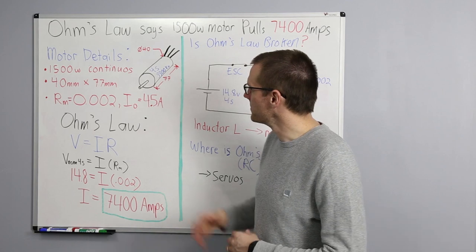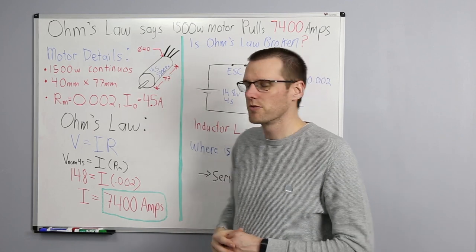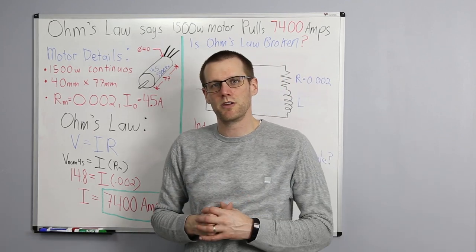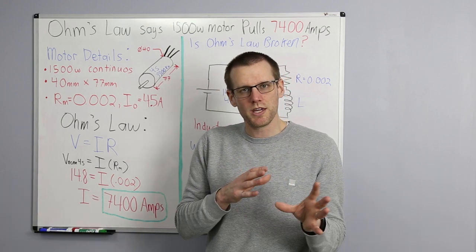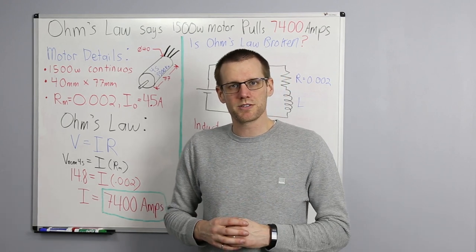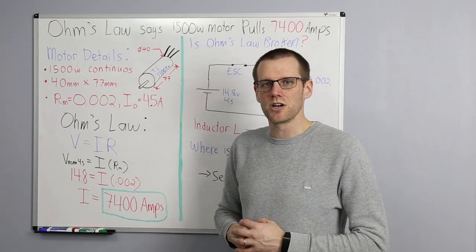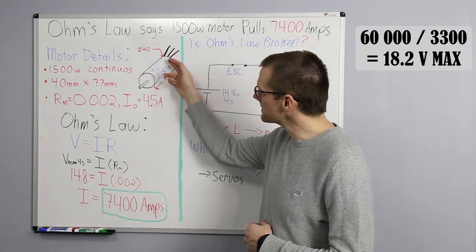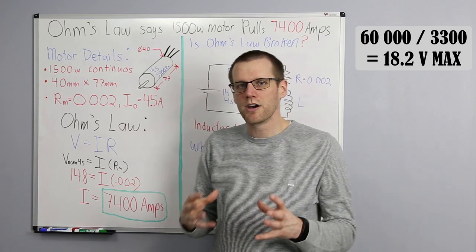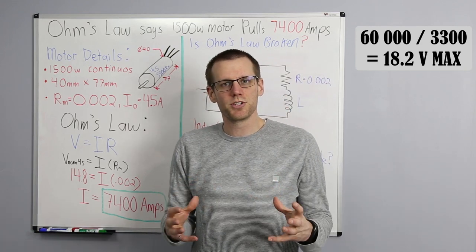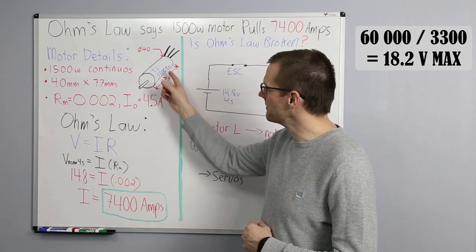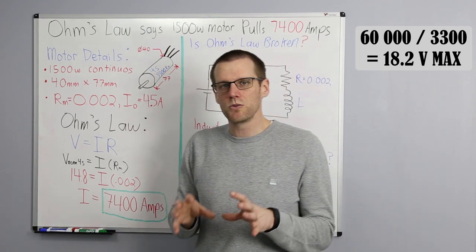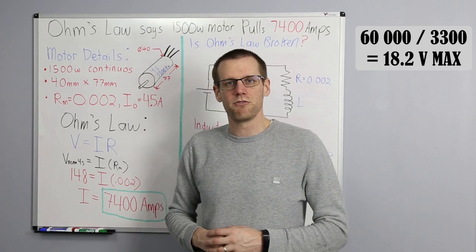Now one thing I need to bring our attention to is the specific KV of the motor. This is a 3300 KV motor. Now the reason why that's important is because most motors around the 28 to 40 millimeter diameter size is going to be limited to about 60,000 RPM maximum. Now if you take that 60,000 and you divide it by the 3300 KV, you get the voltage maximum of this specific motor. That works out to be about 18 volts, which tells us that the only way this motor works is by using a 4S lipo.